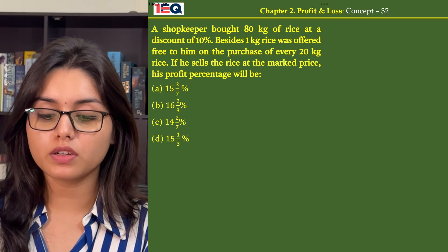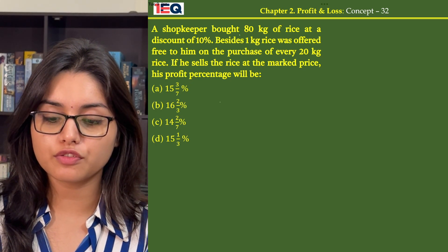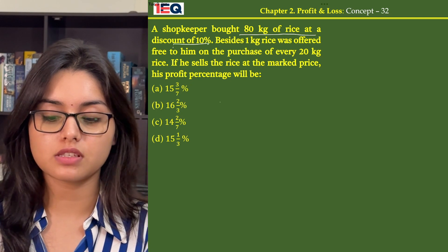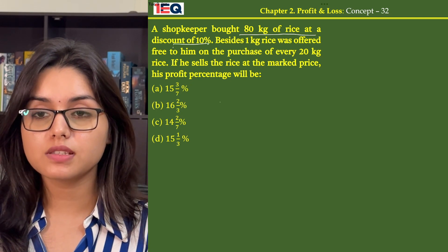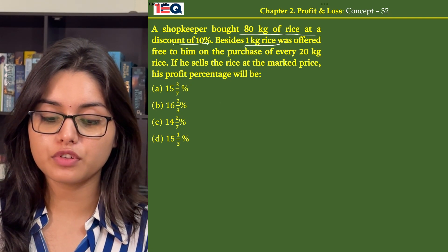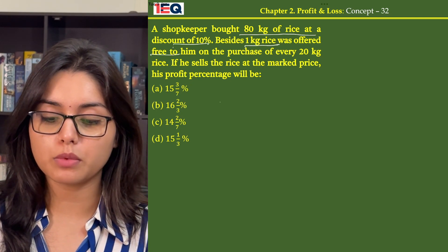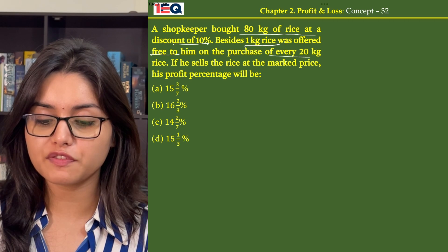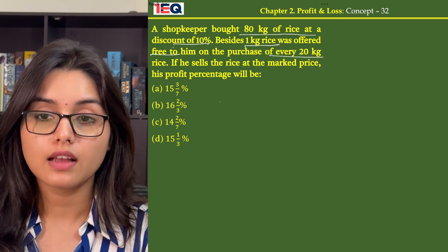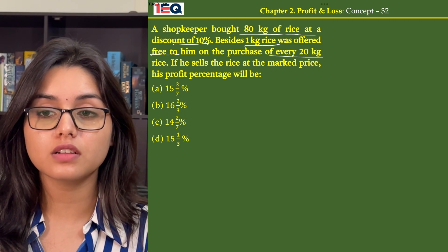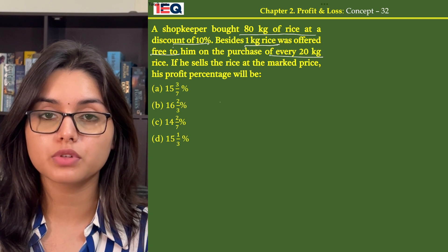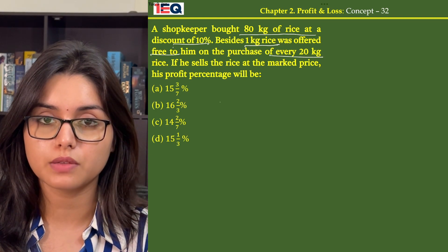A shopkeeper bought 80 kg of rice at a discount of 10%. Besides, 1 kg rice was offered free to him on the purchase of every 20 kg rice. If he sells the rice at marked price, his profit percentage will be?